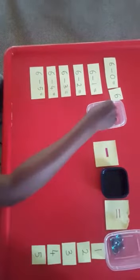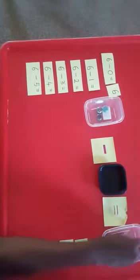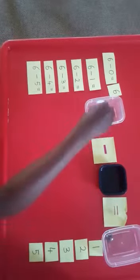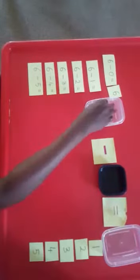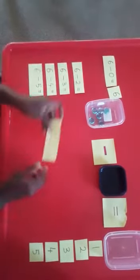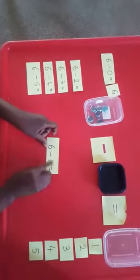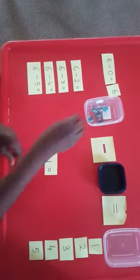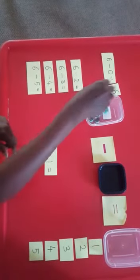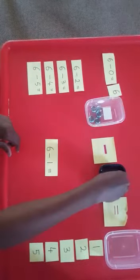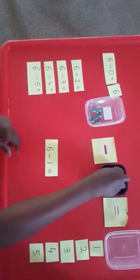I'll take the answer card six and place it next to the equation. We have to take back the stones — they always have to be six: one, two, three, four, five, six. Let's take the next equation: six take away one.